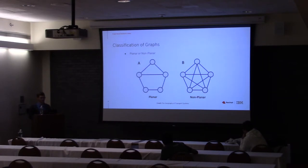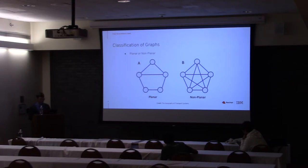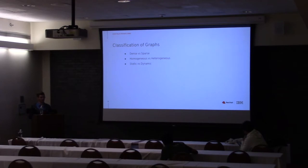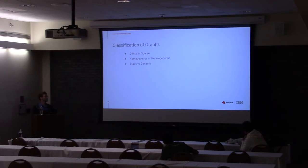Graphs can be weighted or labeled, with numbers or strings. They can be planar or non-planar — if you put a graph on a 2D space and edges are not crossing, it's a planar graph, otherwise non-planar. Graphs can be dense or sparse, depending on the ratio between the number of edges and vertices. They can also be homogeneous or heterogeneous depending on the types of nodes and edges, and static or dynamic if the graph is changing in time — for example, a social network graph is dynamic.